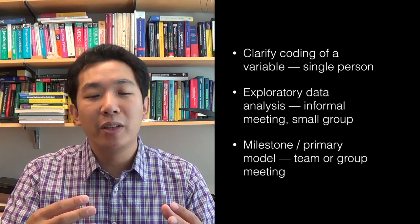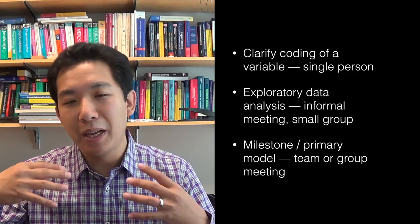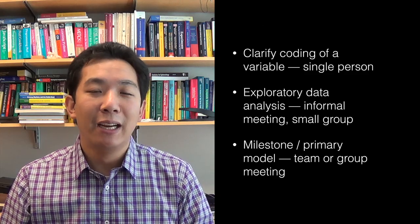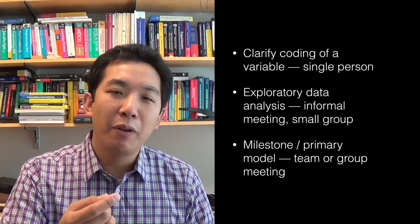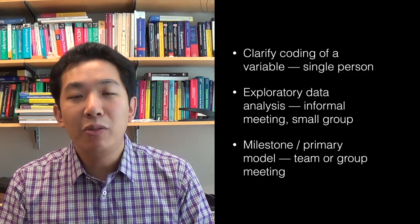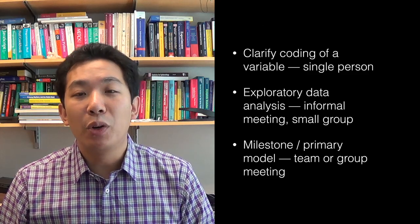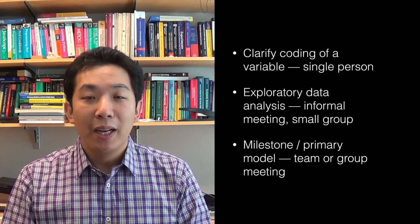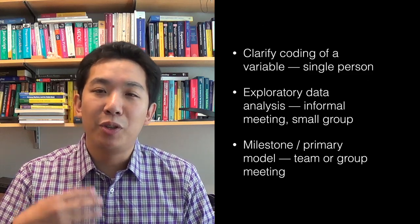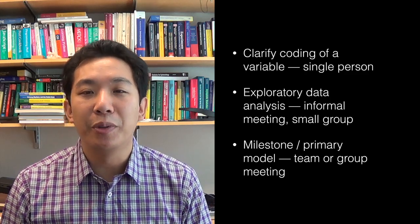At the next level, you might be doing exploratory data analysis and you see something that's really unexpected. As part of the EDA process, you always set your expectations for what the data should look like. When you make a plot or a table and it doesn't look like what you expected and you can't quite explain it, you may need to communicate that to a person or group of people to get feedback. This might take the form of an informal meeting to present some preliminary tables or figures using visualizations.